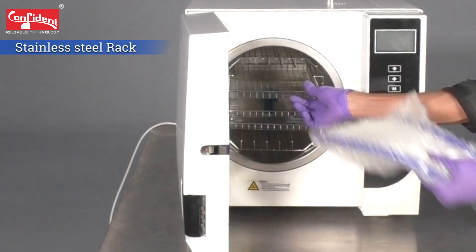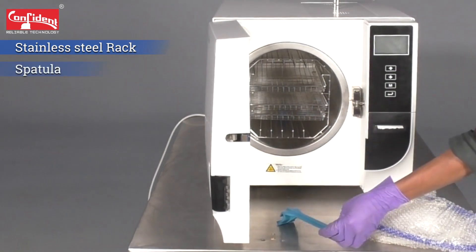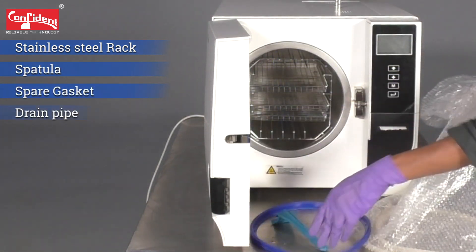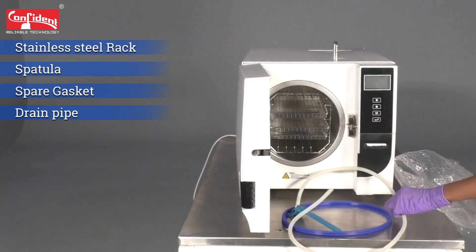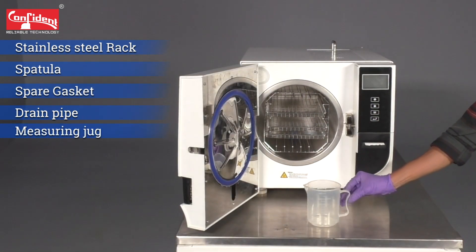The device comes with a stainless steel rack with three trays, a spatula, a spare gasket and a pipe to drain the water. It also comes with a measuring jug.